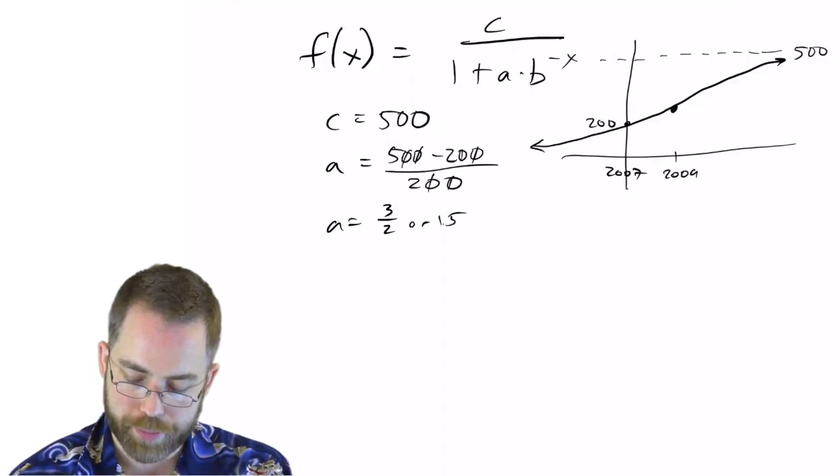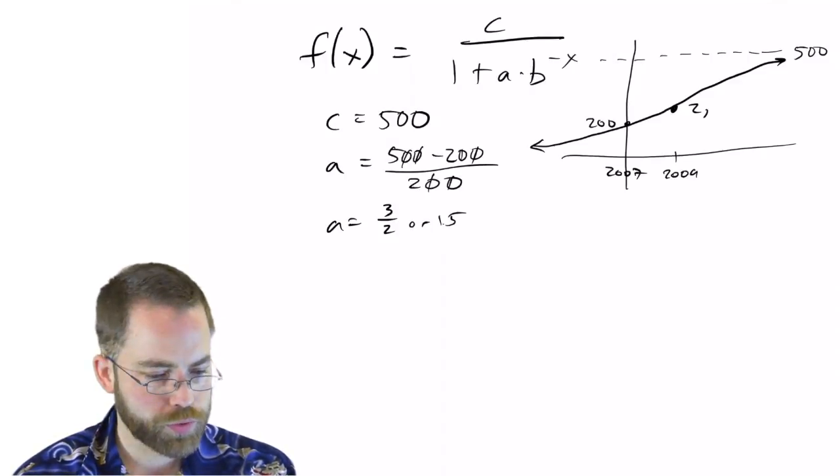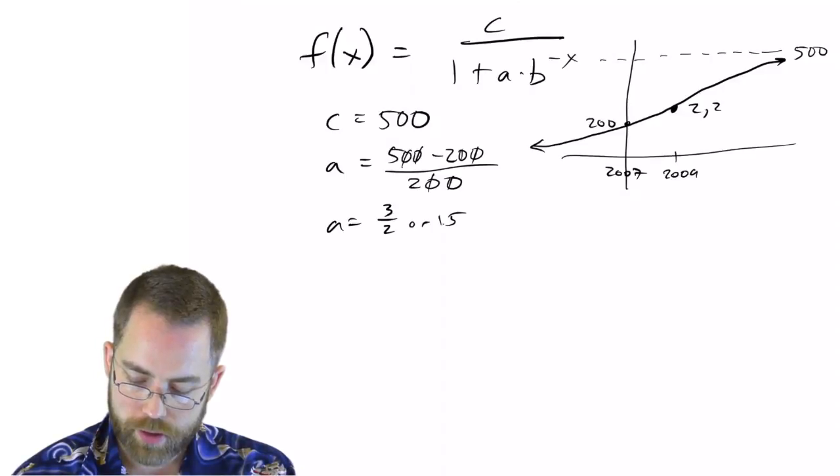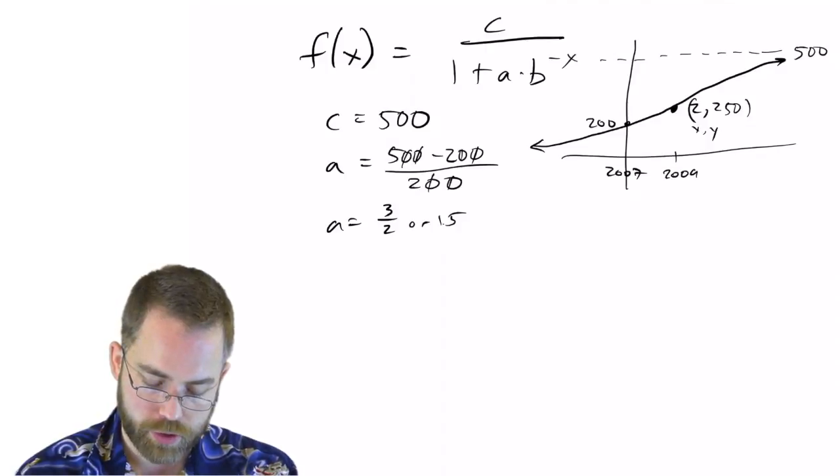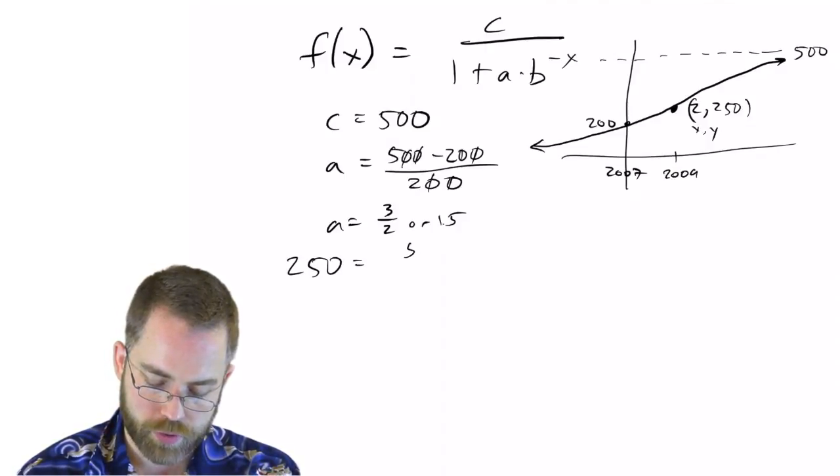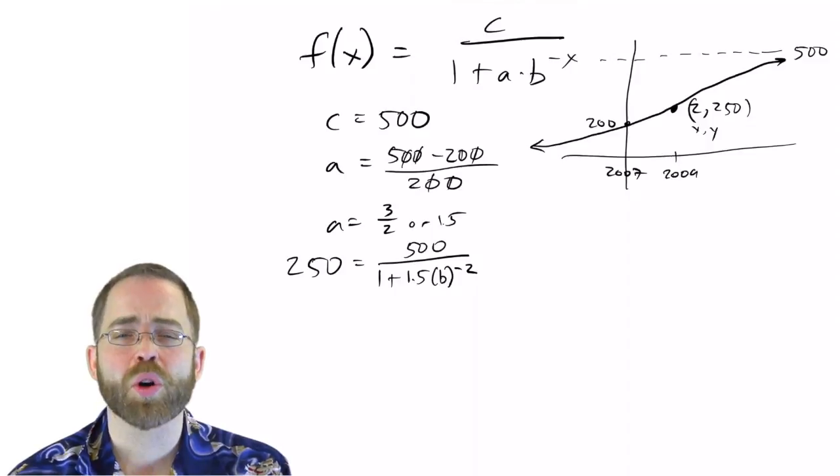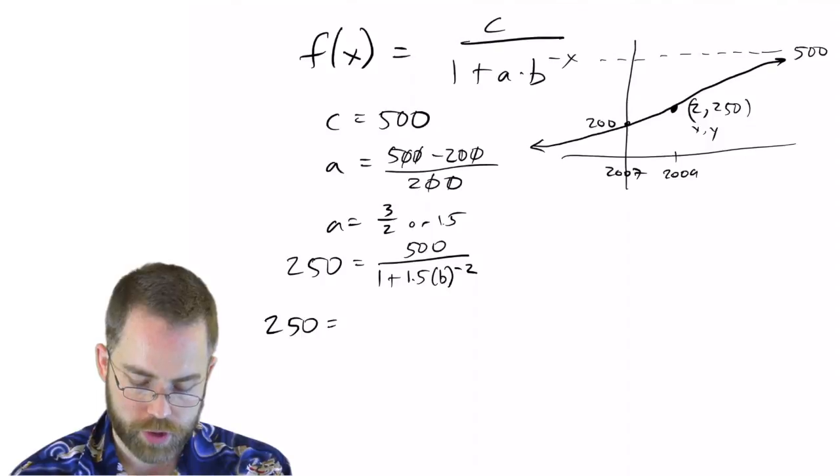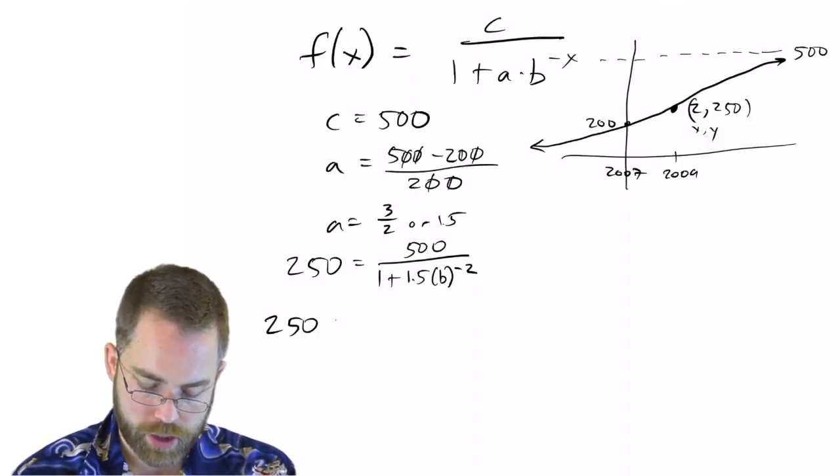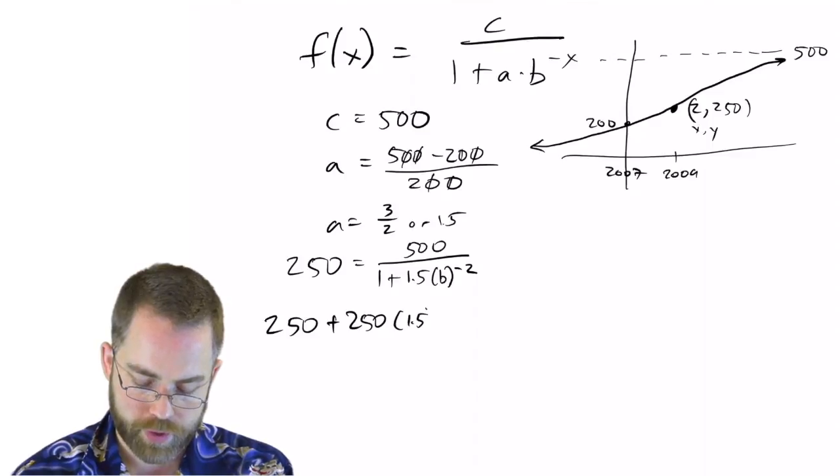Well, good thing they gave us this data point over there at 2, 250, because points are made out of X and Y. So we can plug that in, and we can say, all right, 250 equals 500 over 1 plus A times B to the negative X. All right, so we've got a horrible denominator there. Definitely want to cross-multiply. 250 equals, no, not equals, 250 plus 250 times 1.5 times B to the negative 2 equals 500.